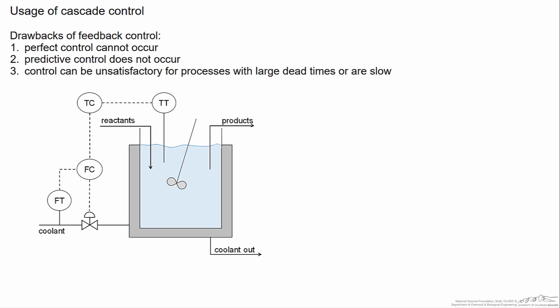However there are a few major drawbacks to feedback control which makes it impractical for particular types of purposes. The first is the fact that perfect control cannot occur. This may or may not be of huge concern, but it does work out more conveniently if you can develop a process where, for a particular disturbance, it can handle the disturbance such that the controlled variable is not changed.